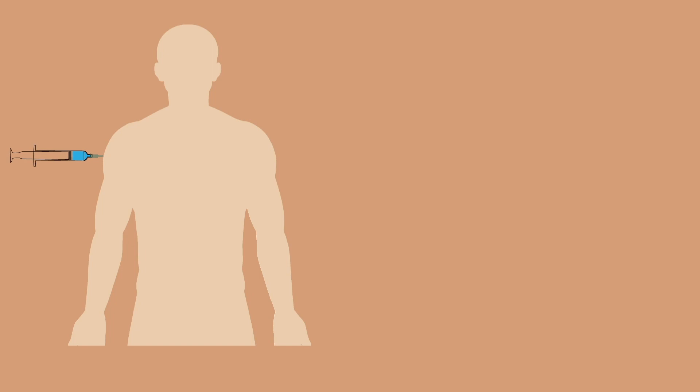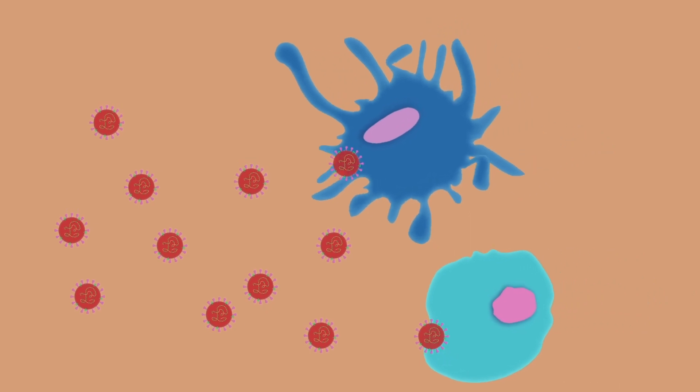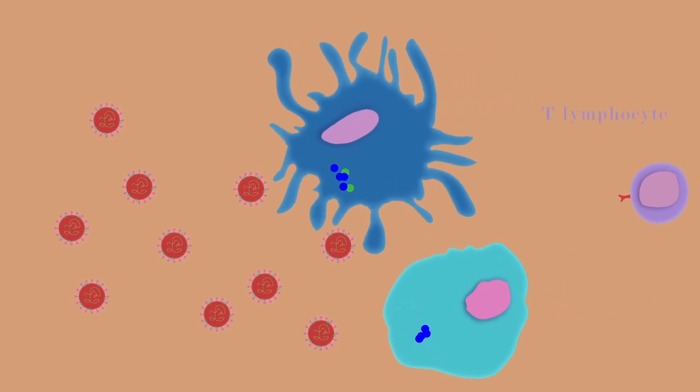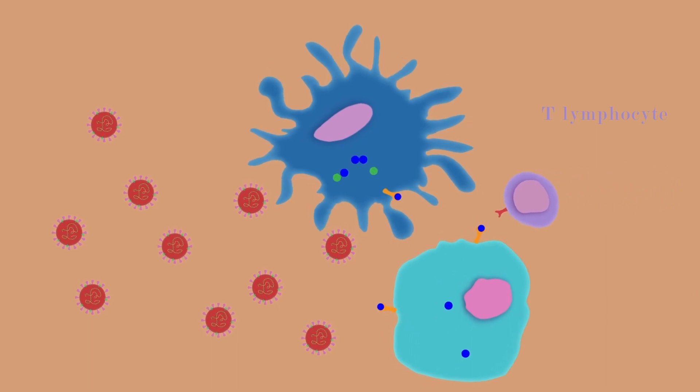With the injection, the inactivated virus enters the organs, but cannot reproduce. Immune cells take the virus and they break it into small fragments, which similarly to the other vaccines they present to T-lymphocytes.